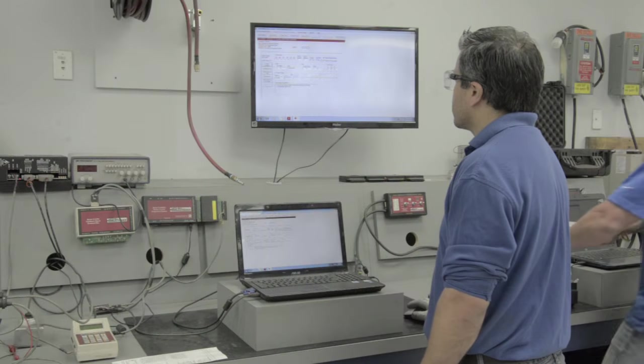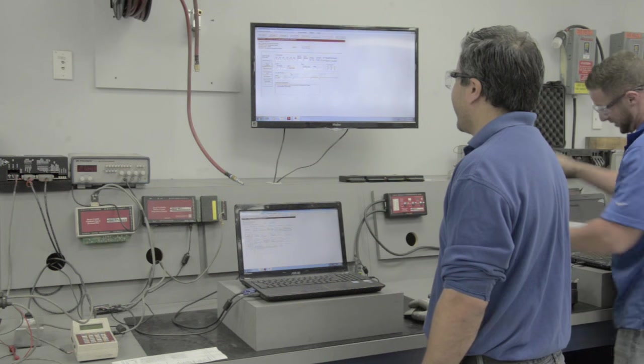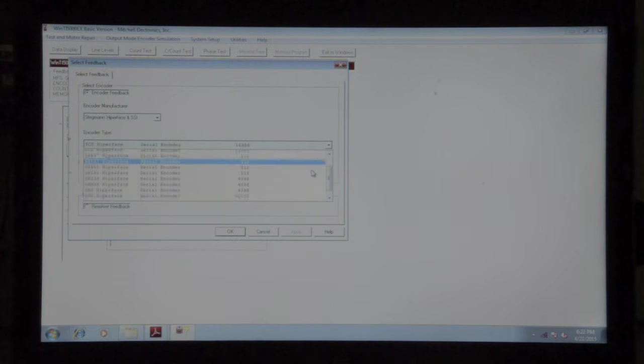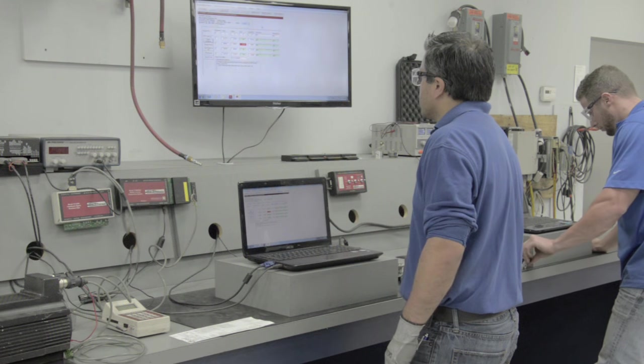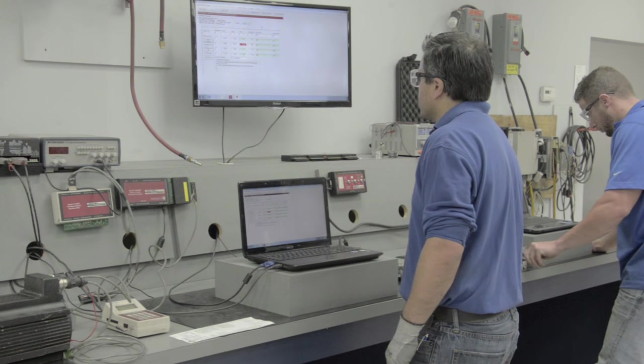Now we need to select the feedback in our Mitchell software. Our motor here has an encoder. Next, we need to select an encoder manufacturer such as Finick, Heidenhain, Indramat, Mitsubishi. This particular encoder is a Stegman. Now we choose our manufacturer type. This one is an SRM. And we select our motor manufacturer. This one is an Allen Bradley MPF. Then we will verify encoder status for receiving data, any internal errors, error types, and the ID of the encoder.